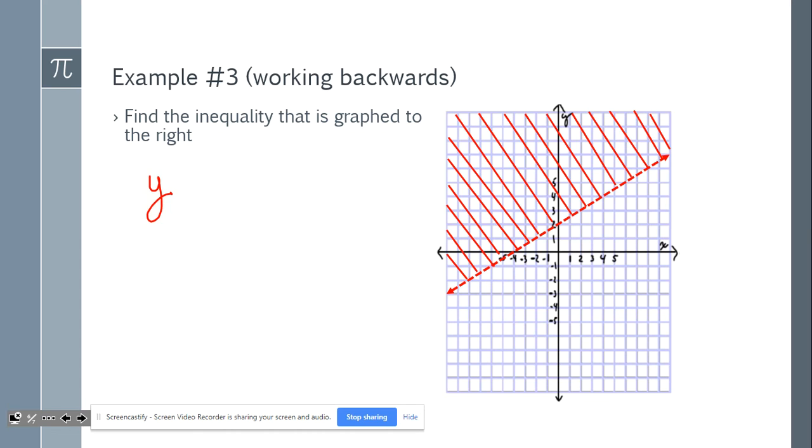So at this point, I can see I have a dashed line, so it's a sign that does not have a bar underneath it. And I'm shading towards the up arrow on the y. So that's going to be y is greater than. Now I need to look for my slope, and I need to look for my y-intercept. My y-intercept is right there at 2, so I know it's going to be plus 2 on the end.